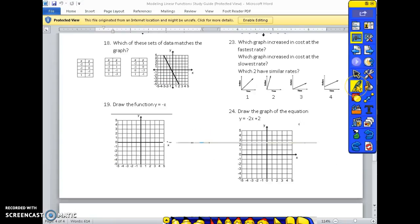Number 19, draw the function y equals negative x. There is no y-intercept, so you're going to start at zero or at the origin. Your slope, this is the same thing as negative 1x, so you're going to go down one to the right one, and that is your graph.